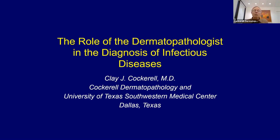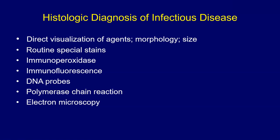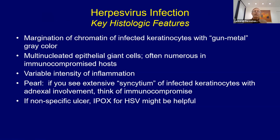Given that we're dealing with a worldwide pandemic of an infection, today we might talk about our role as dermatologists and dermatopathologists and how we can diagnose infectious diseases. There are not too many cutaneous manifestations of COVID-19, although there have actually been a couple of case reports of a mild morbilliform eruption. How do we diagnose infectious disease under the microscope? There are a lot of different ways: you can see the organisms, use special stains, DNA probes, PCR, and electron microscopy.